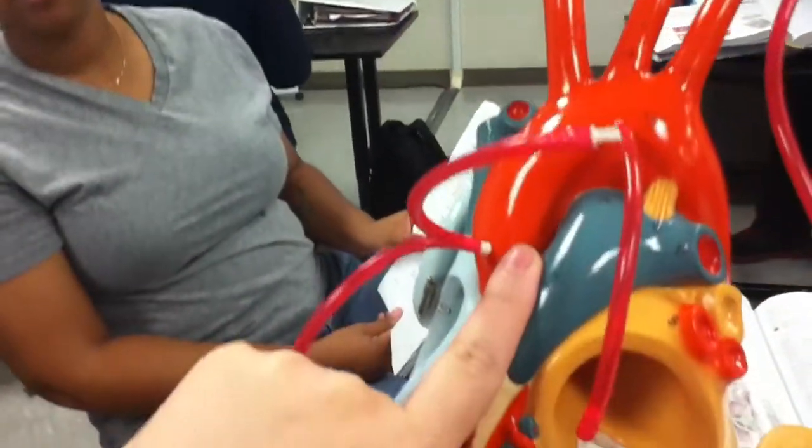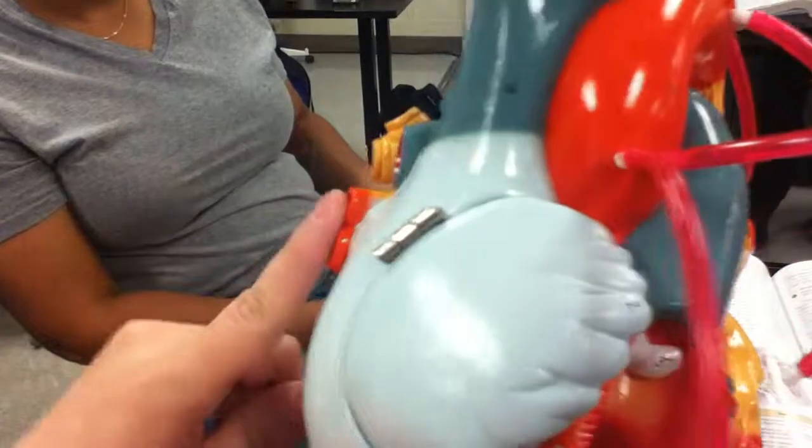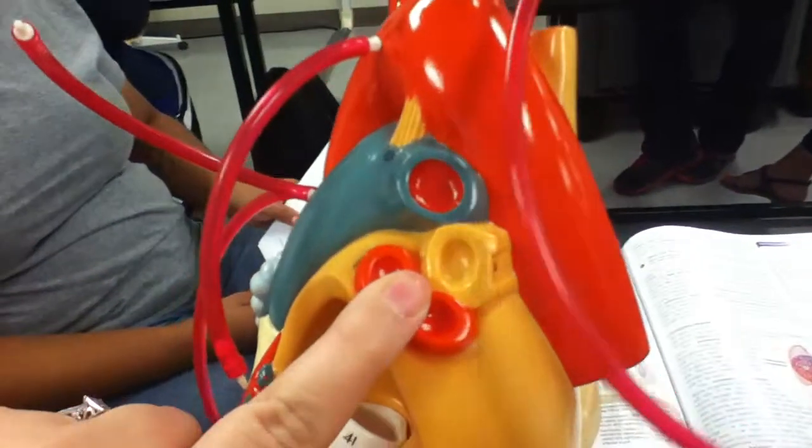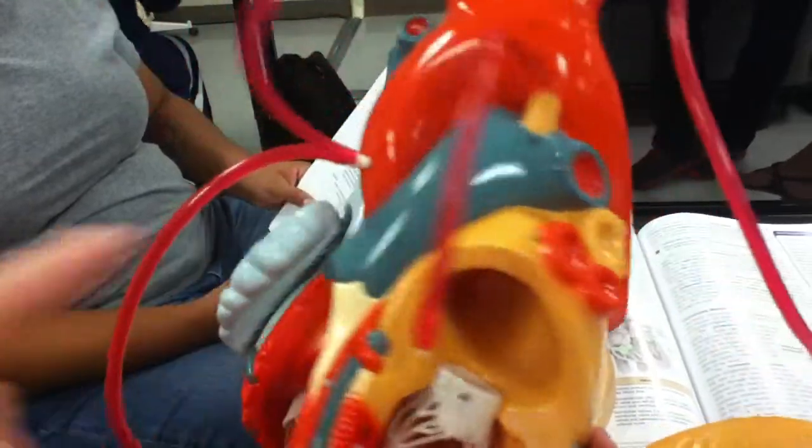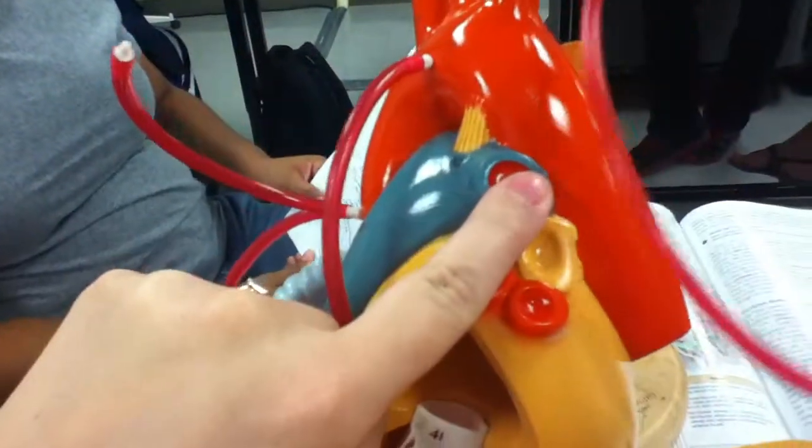This is the pulmonary trunk. This will be the right pulmonary artery, left pulmonary artery. This will be the right pulmonary vein, left pulmonary veins. Inferior vena cava here.